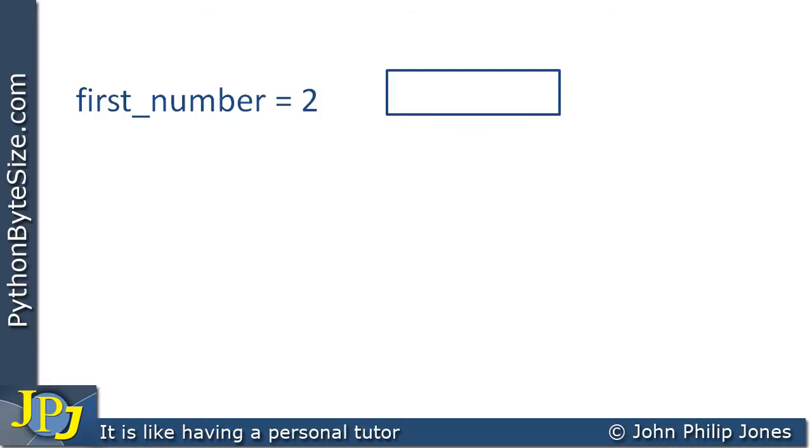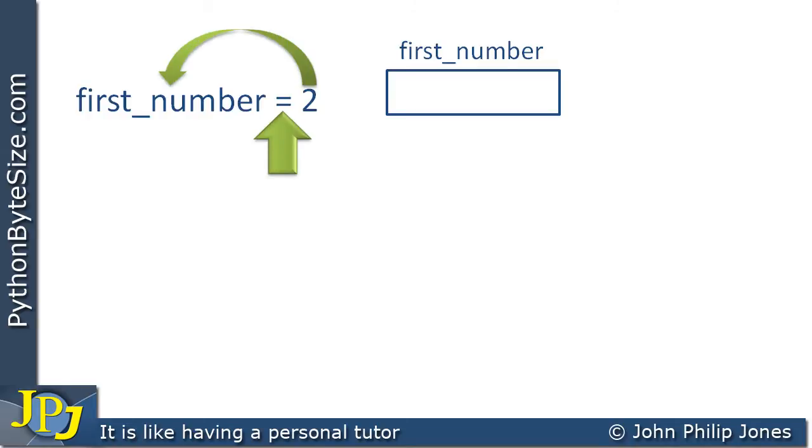What will happen is Python will generate an area which I modelled with this rectangle here, and give it the name first number. This assignment statement resulted in the two being copied into the variable first number, which we can animate here as showing the two moving into the variable first number.